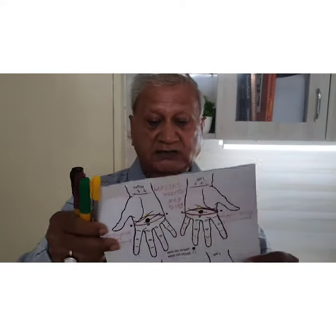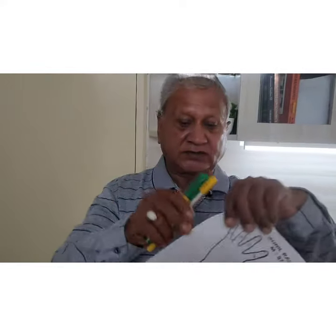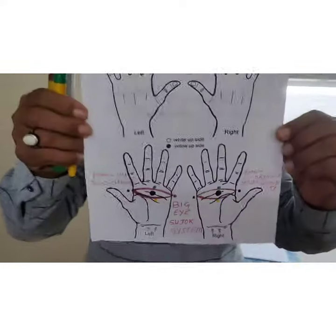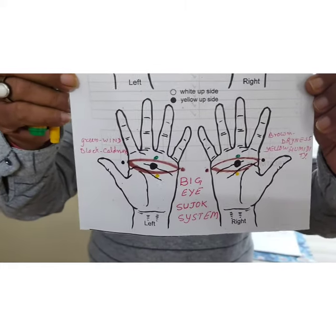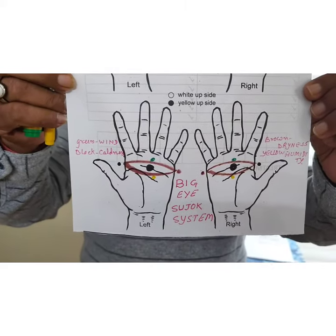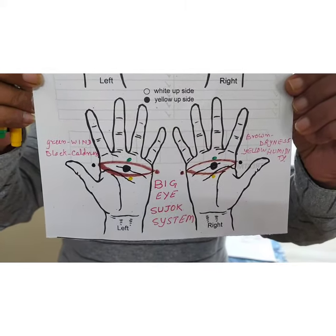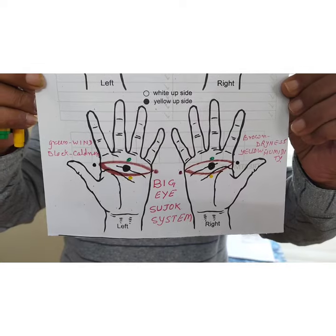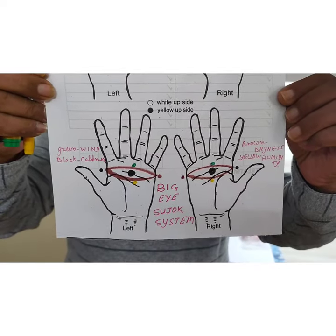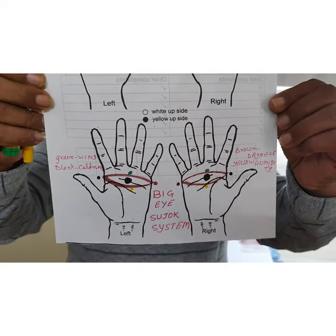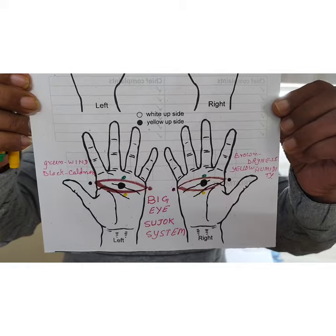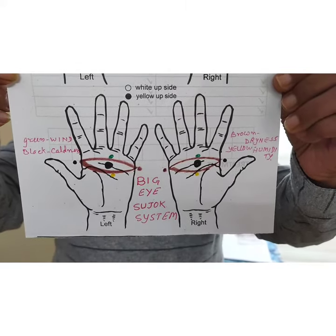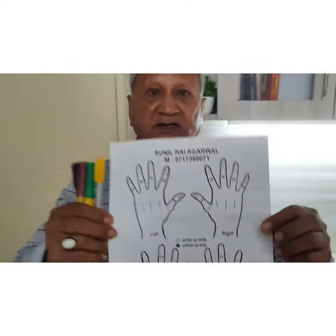You can also see in the chart how these eyes are plotted as per the Sujok correspondence system. In Sujok, both the palms have eye correspondence. These eye correspondences can very easily be treated with the help of colors.